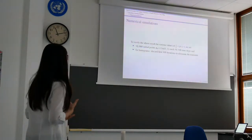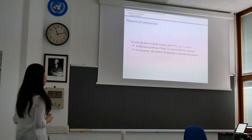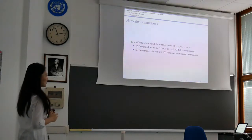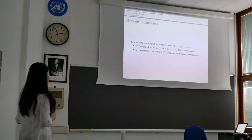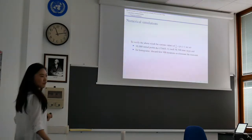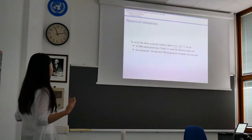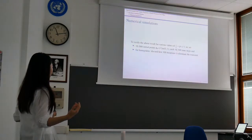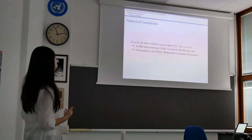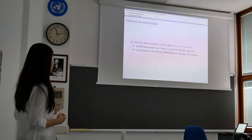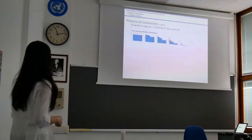To verify the above three cases, we did simulations for different values of p between 1/2 and 1. The numerical setup is 10,000 initial points randomly chosen from the uniform distribution on [0,1], each running for 10,100 time steps. For the histogram we discard the first 100 iterations to eliminate the transient stage.